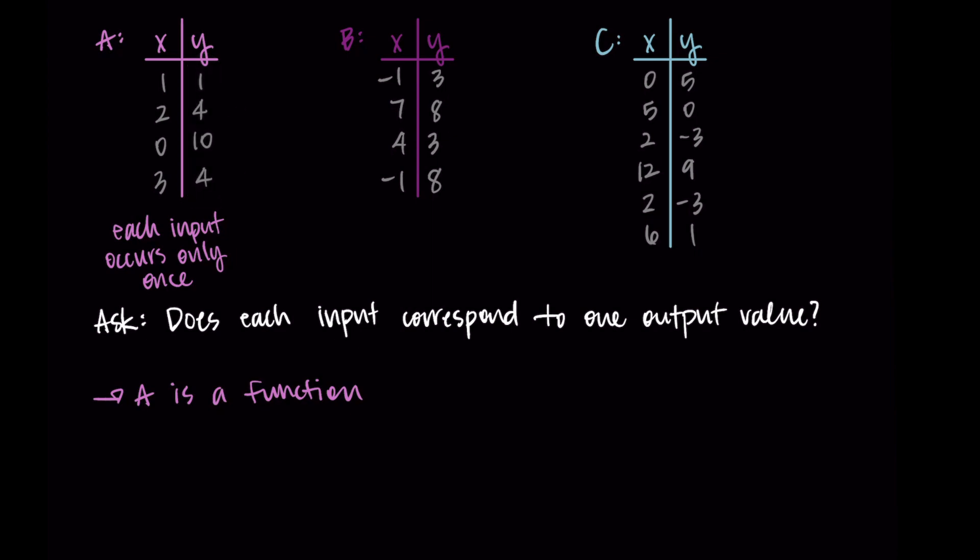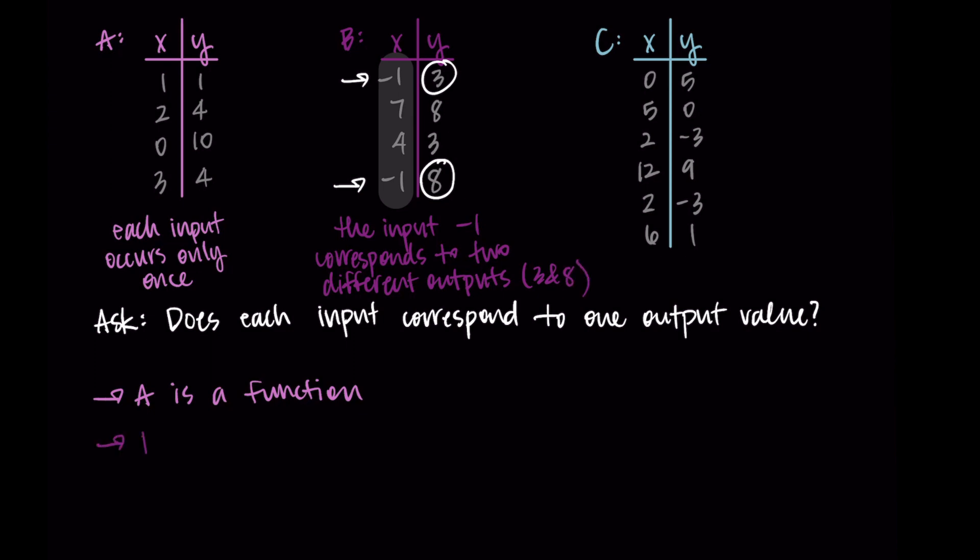Looking at relation B, in the x column you'll notice that -1 shows up twice. We have -1 as an input two times, and this input corresponds to different outputs - it corresponds to 3 and 8. This means that B is not a function. It's a relation but not a function, because there are inputs that have multiple outputs, so it doesn't satisfy our definition.